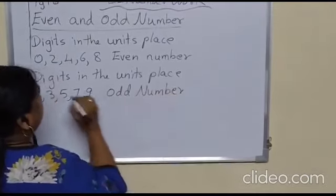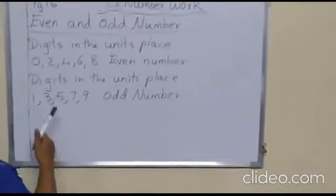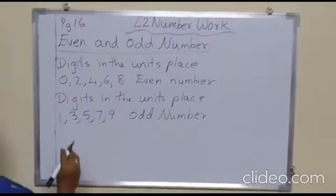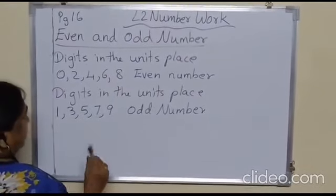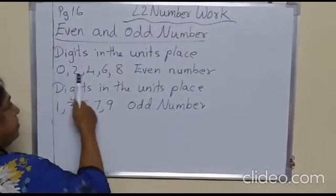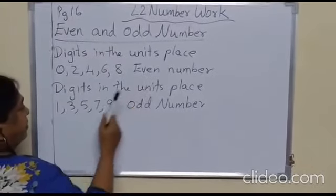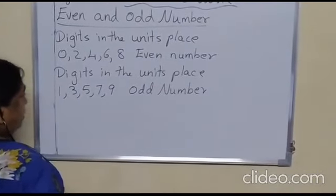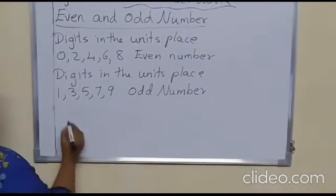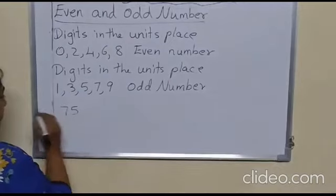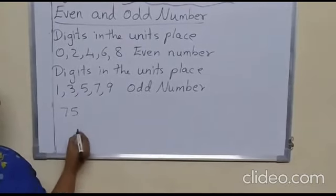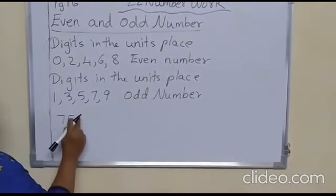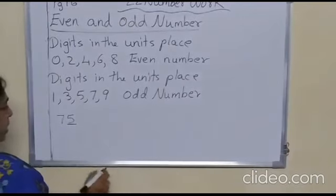When you are checking whether a number is even or odd, you have to look at the digit in the units place. If those digits are there, then it is an even number; if the other digits are there, then it is an odd number. For example, suppose the number is 75. You have to see what is there in the units place — it is 5 — so this number is an odd number.